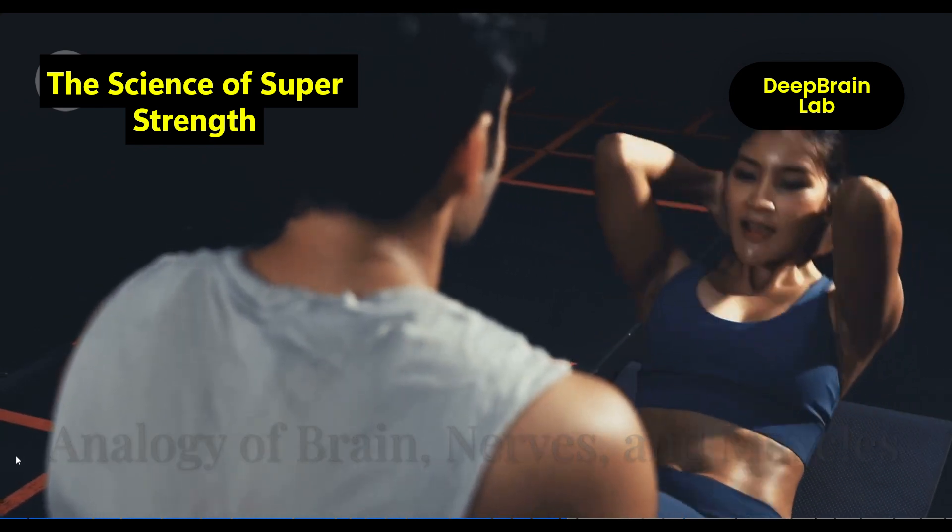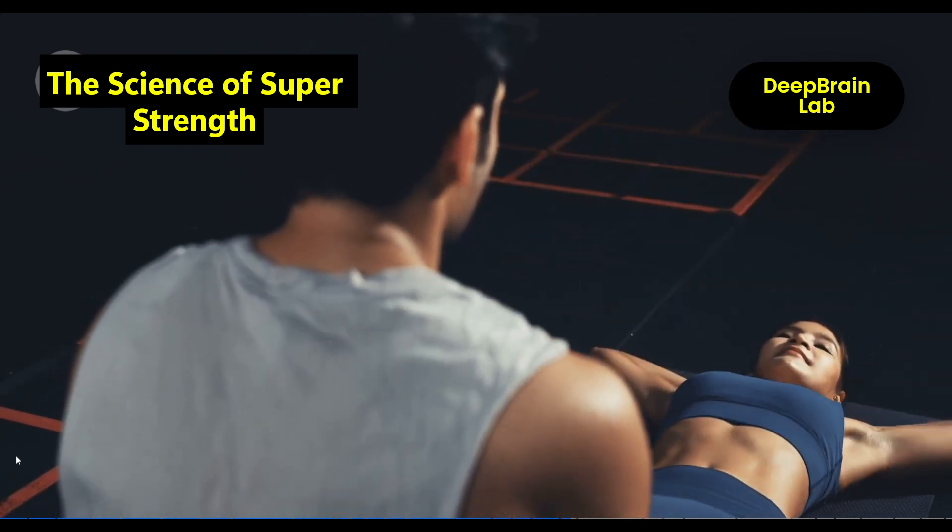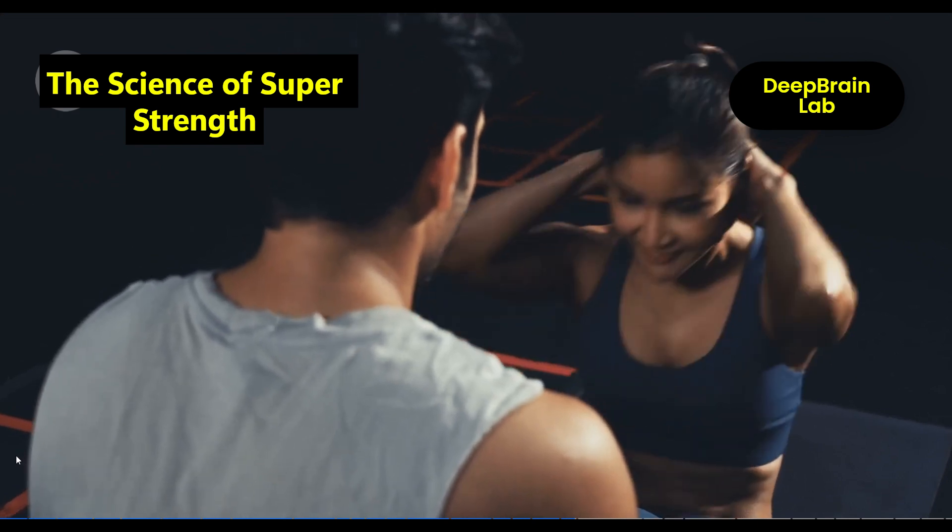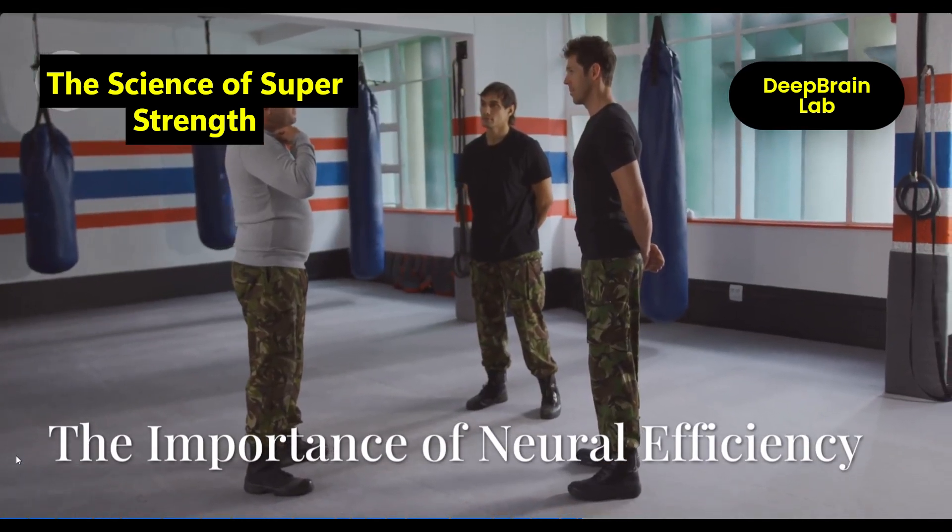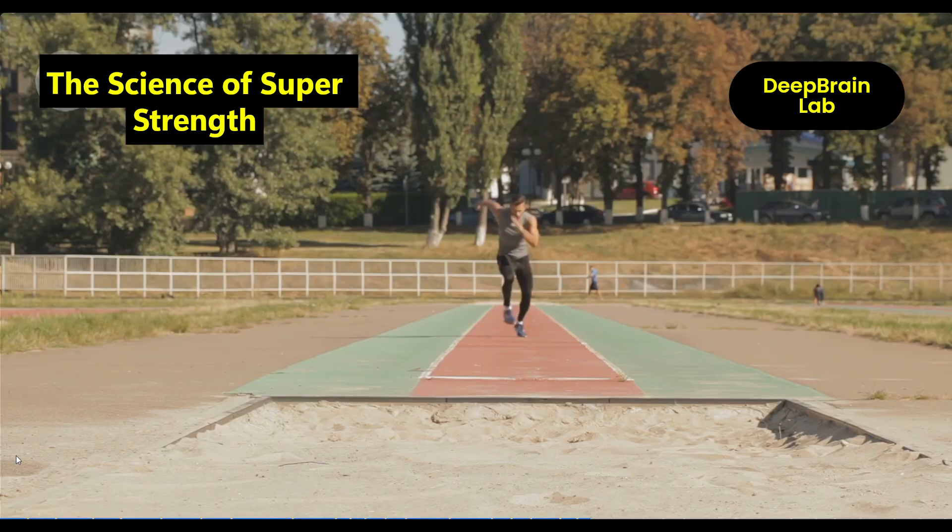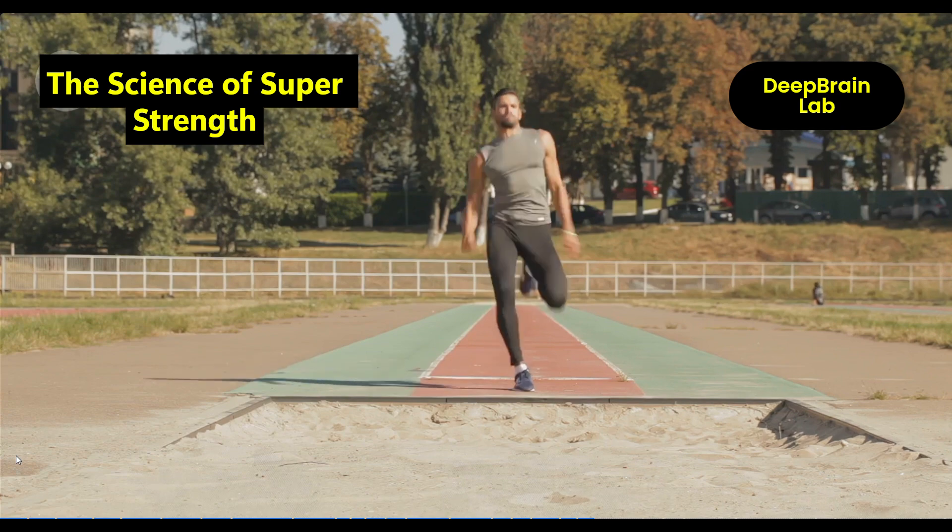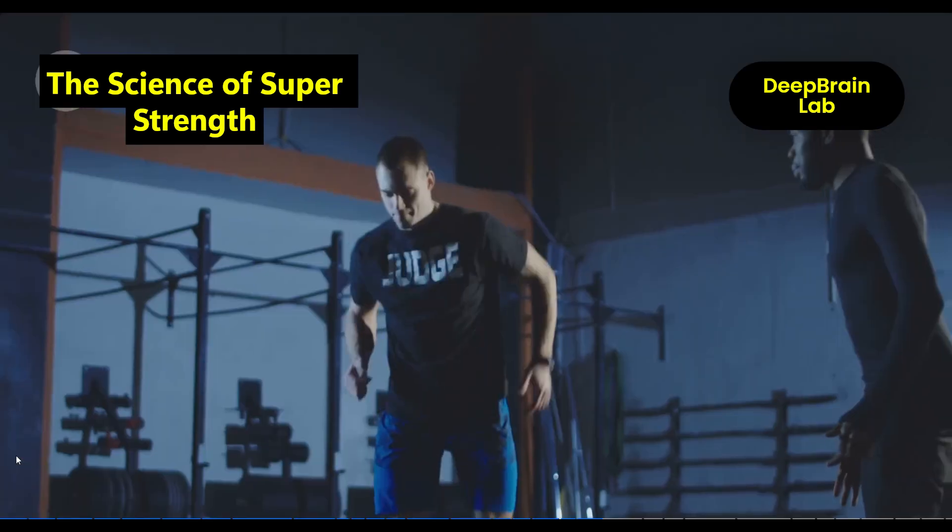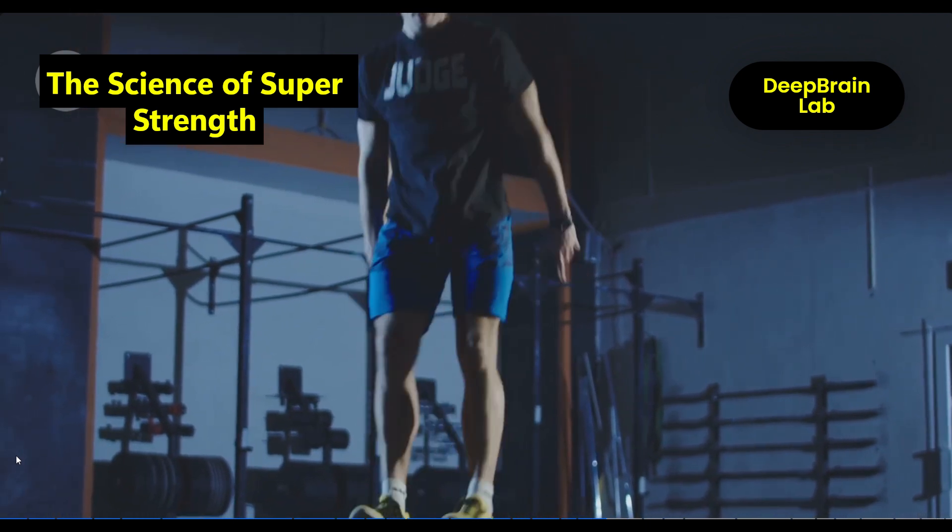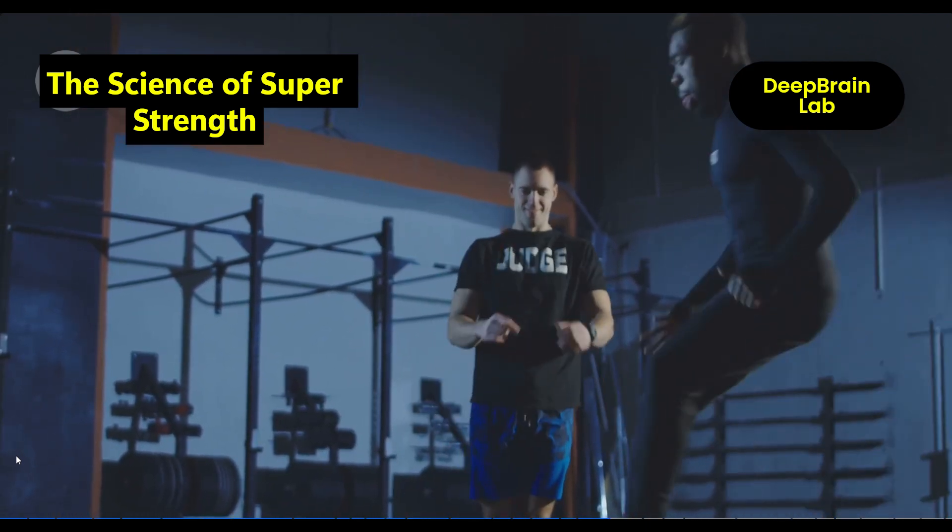Think of it this way: your brain is the coach, your nerves are the messengers, and your muscles are the team. A great coach with fast messengers gets the best performance. This is why elite athletes often have insane vertical jumps—a key test of neural efficiency. A 30-plus inch vertical jump usually signals explosive neural output.